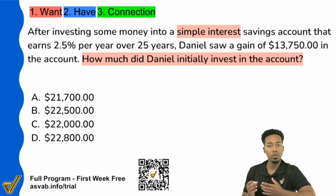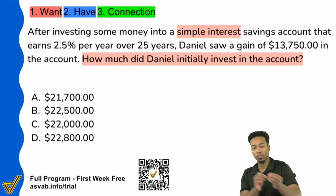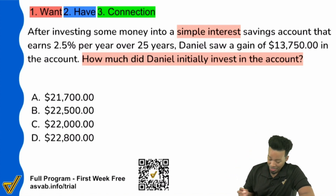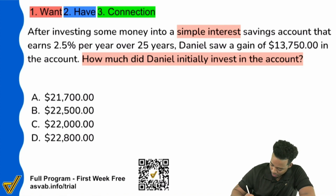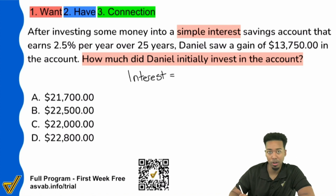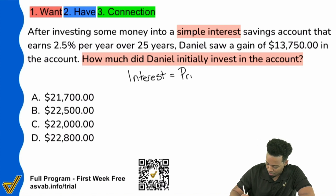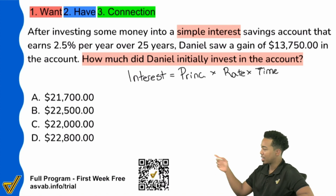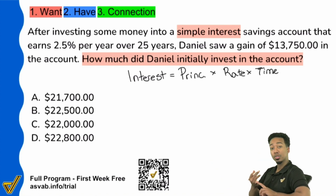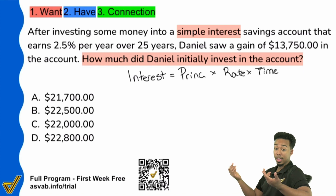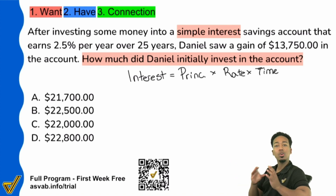Now, what we know is that there is a formula for simple interest. Let me go ahead and remind you what it is. The interest that you earn is equal to P times R times T — that is your principal investment multiplied by your rate, multiplied by the amount of time. Interest equals principal times rate times time, or I equals PRT. You might have heard that before. Knowing how to use this formula is going to make everything so much easier.